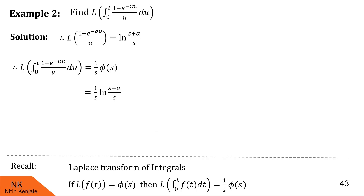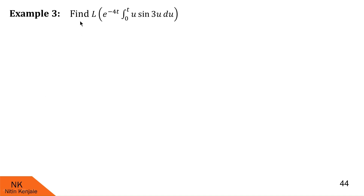Now let us proceed to the next example. Here we are asked to find L{e^(−4t)·∫₀ᵗ u·sin 3u du}. We will solve this using the first shifting theorem. We consider the integral term as f(t), so this becomes L{e^(−4t)·f(t)}. By the first shifting theorem, we first find L{f(t)}, i.e., the Laplace of the integral. To do so we first find L{u·sin 3u}.